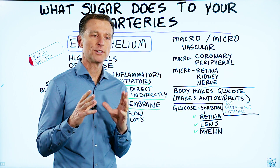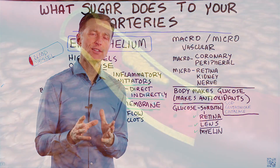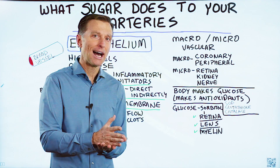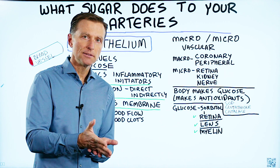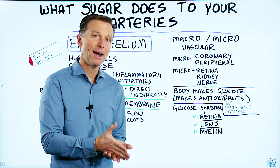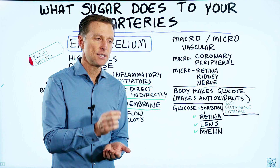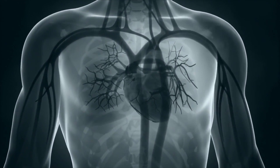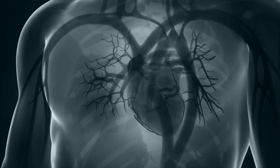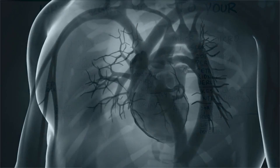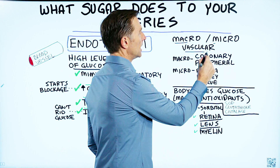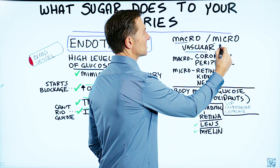Let's talk about what sugar does to your arteries. Probably the biggest damage from high amounts of sugar in the blood with a diabetic is done to your vascular system. I want to talk about what occurs in that state. You have two things: the macrovascular system and the microvascular system.